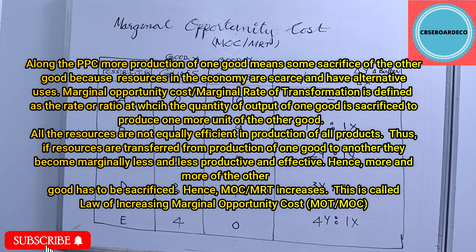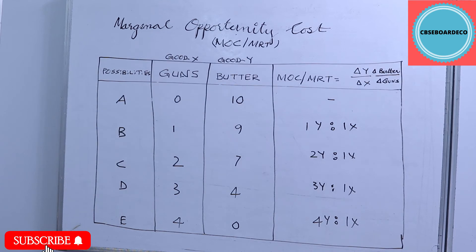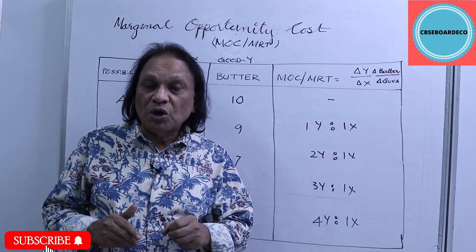Another example: soldiers are trained to fight in warfare. If you send farmers instead of soldiers to fight, more and more farmers will die — one, two, three, four — because they are not as efficient as soldiers. This is a clear case of how resources are not equally efficient across different uses.